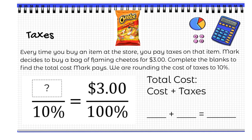Every time you buy an item at the store, you pay taxes on that item. Mark decides to buy a bag of flaming Cheetos for $3. Complete the blanks to find the total cost Mark pays. We are rounding the cost of taxes to 10% because in Bentonville it's about 9.5%. So if 100% represents $3 — 100% is the total cost of an item — we need to go down to 10%. Going down means dividing by 10, so I would divide $3 by 10, which gives $0.30.